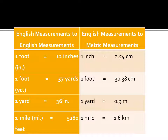For English-to-English measurements: in one foot there are 12 inches. For English-to-metric conversions: in one inch there are 2.54 cm; in one foot there are 30.48 cm; in one yard there are 36 inches; in one yard there is 0.9 meters; in one mile there are 5,280 feet; and one mile is equivalent to 1.6 kilometers. Always remember this table as it will guide you in converting units.